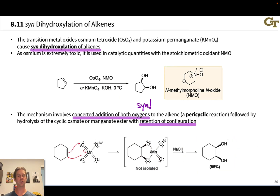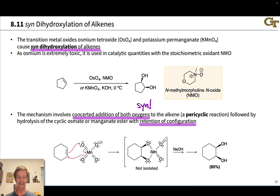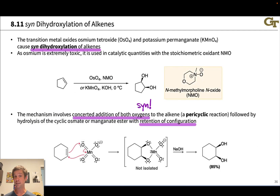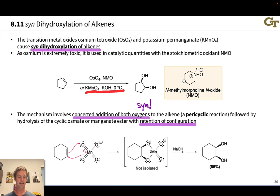Notice the stereochemical difference between the two methods: the anti-dihydroxylation approach goes through an epoxide — epoxidizing first with MCPBA, then opening with acidic water — whereas for syn-dihydroxylation, we use OsO4 with NMO or potassium permanganate with base at 0°C in one step to get the syn-dihydroxylation product.